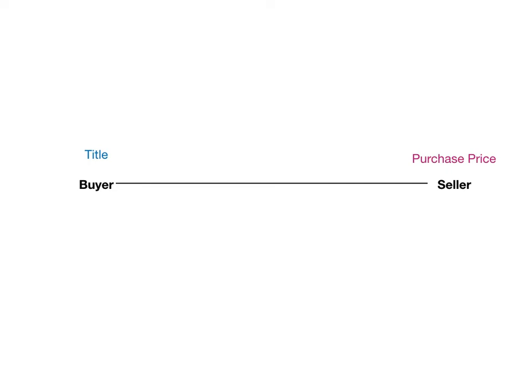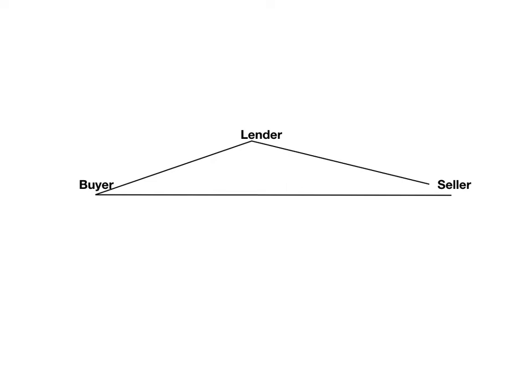If there is a third-party lender involved, the purchase price still needs to be paid to the seller. The buyer gives the lender a promissory note and a security instrument. Then the lender gives the purchase price to the seller, and the seller gives title to somebody — either the lender or the buyer, depending on whether you are in a mortgage or a deed of trust state.